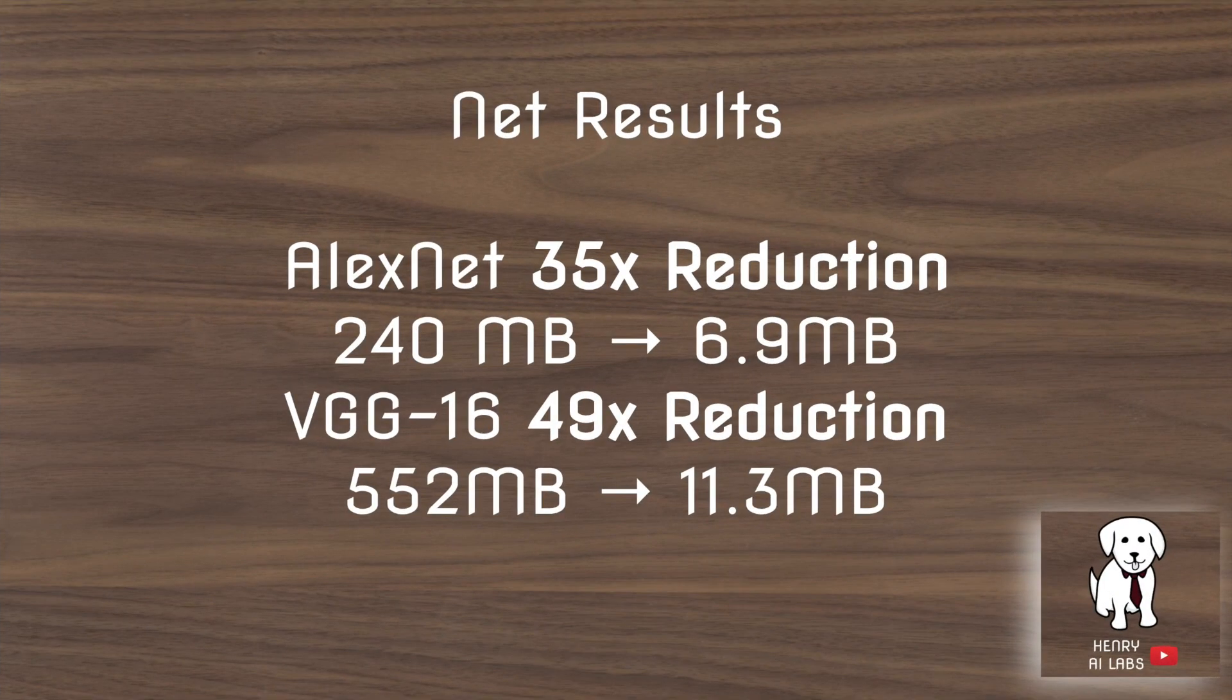The results of this paper reduce AlexNet by 35 times. This results in a reduction from 240 MB to 6.9 MB. They also reduce VGG16 by a factor of 49, from 552 MB to 11.3 MB.